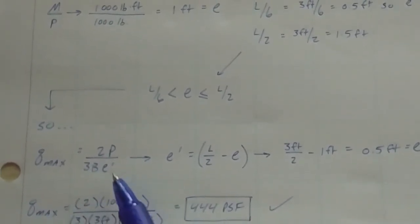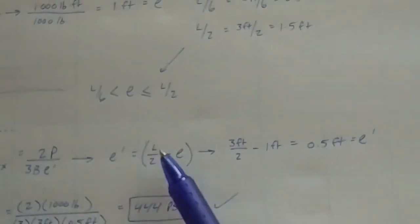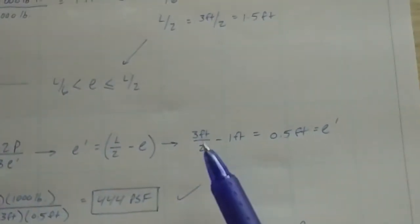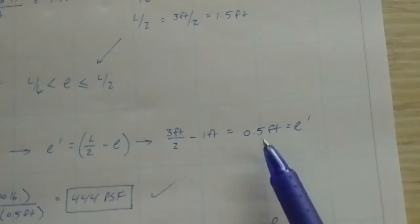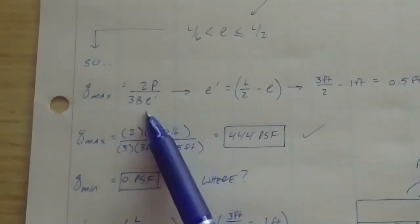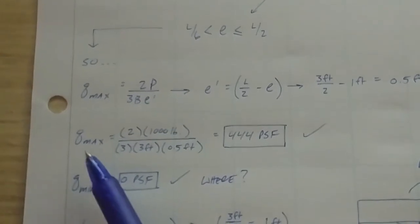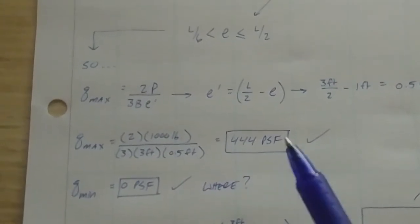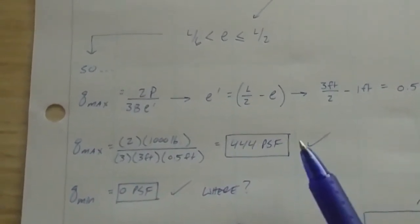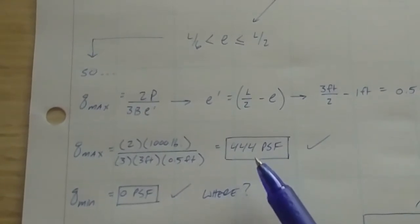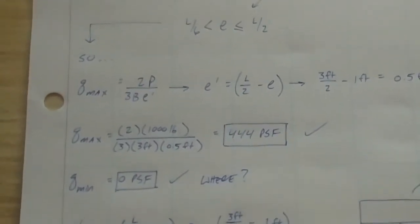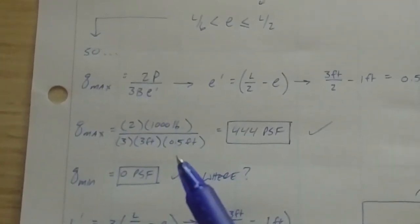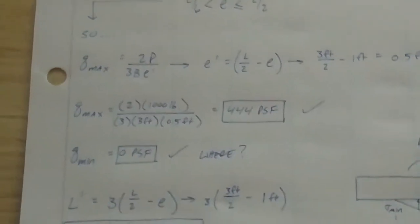So we know we're between them. So our new equation for max bearing pressure is 2P divided by 3 capital B E prime. E prime is L over 2 minus your eccentricity that you solved for above. That gets us 0.5 feet. We plug that back in for E prime to get our max bearing pressure, which equals 444 PSF. So see, that's different than in method 1, we got 333 PSF, so this is larger. So I could go further into that, but I don't think you guys are ready for that yet. So trust these equations, they work.